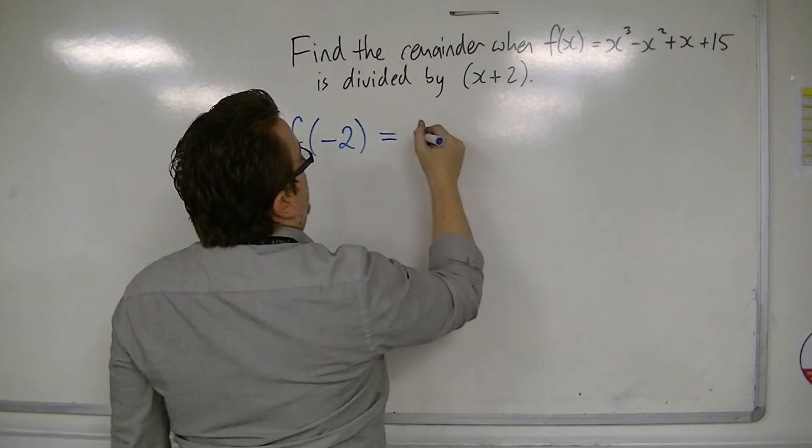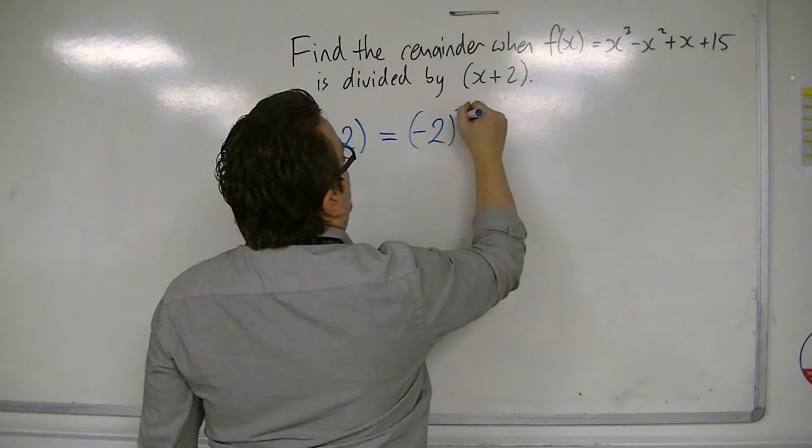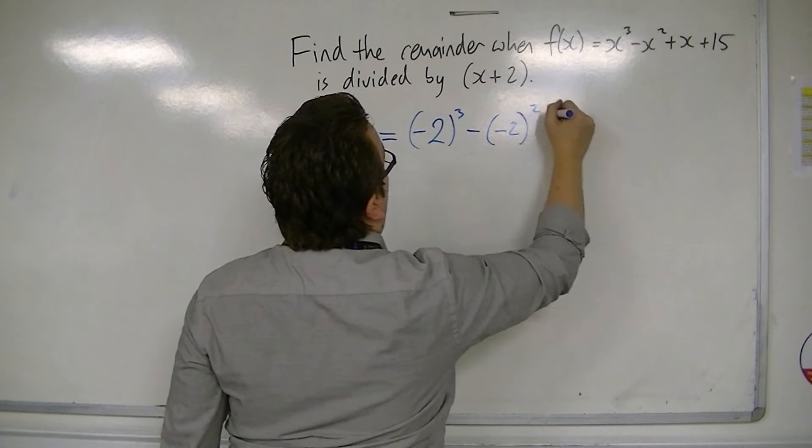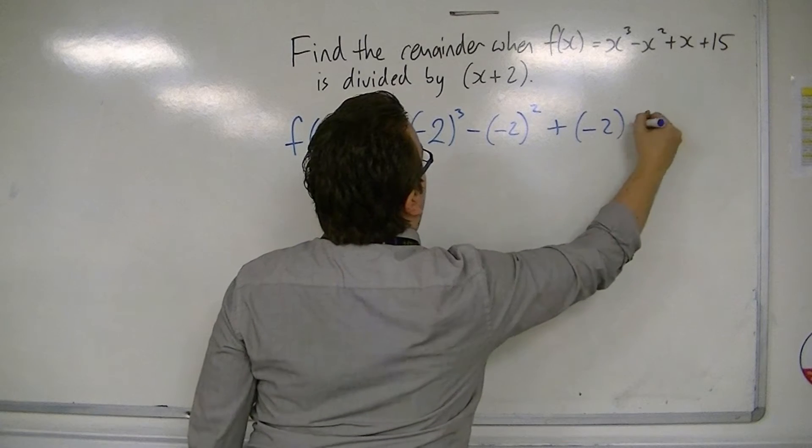We substitute in minus 2, so we get minus 2 cubed, take away minus 2 squared, plus minus 2, plus 15.